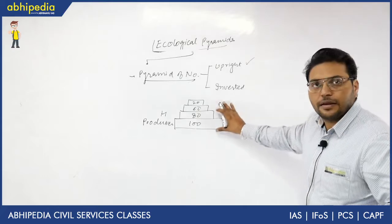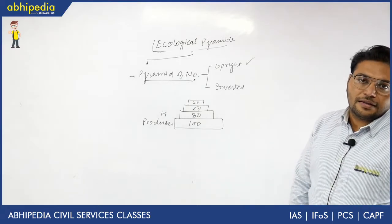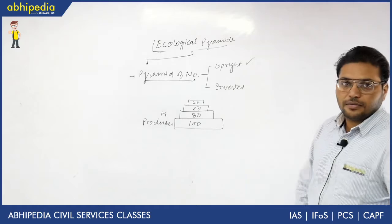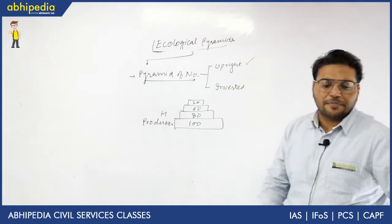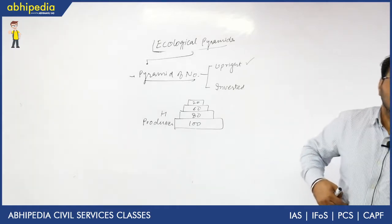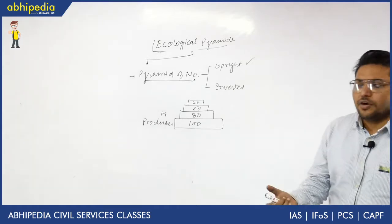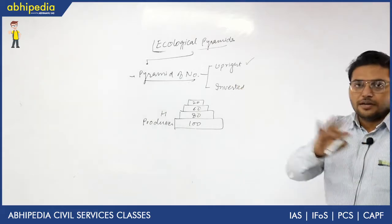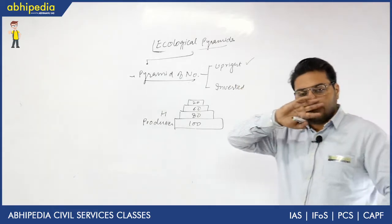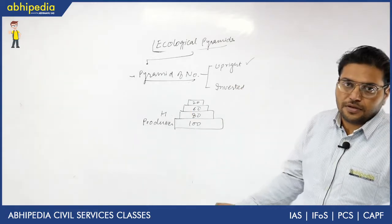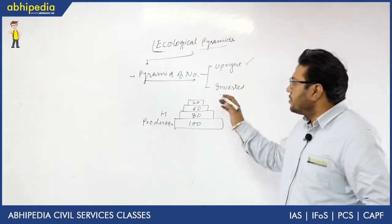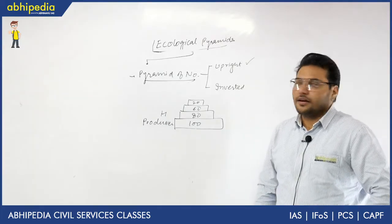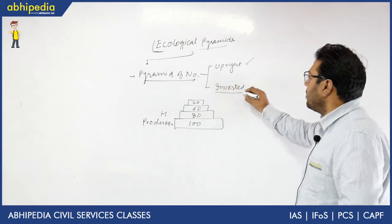Now we need to understand the example where the pyramid of number can be inverted. You have to remember one example, as it will be asked in the exam. The statement that the pyramid of number is always upright is wrong — that statement is incorrect. There is an inverted case as well.